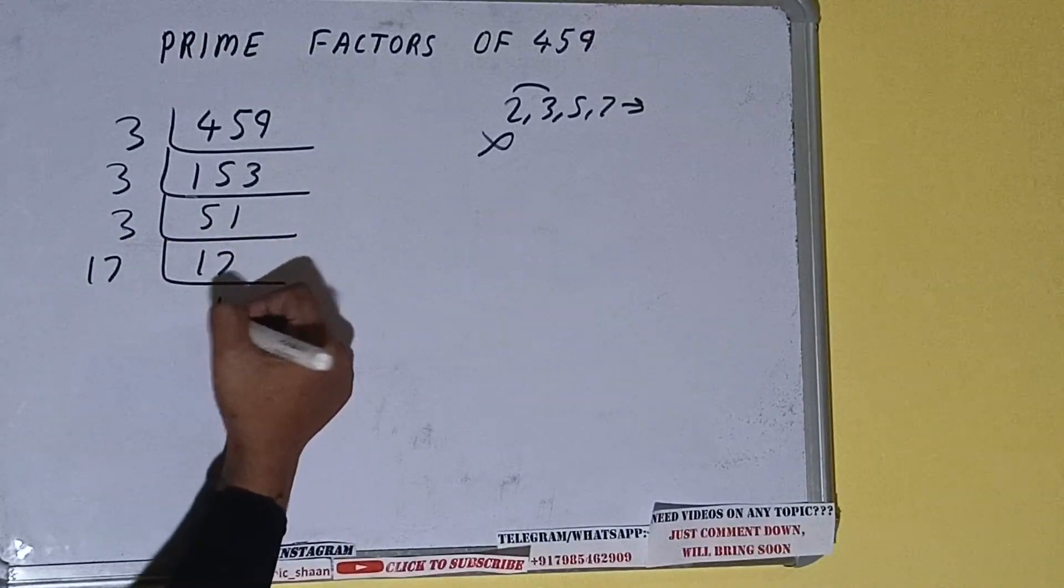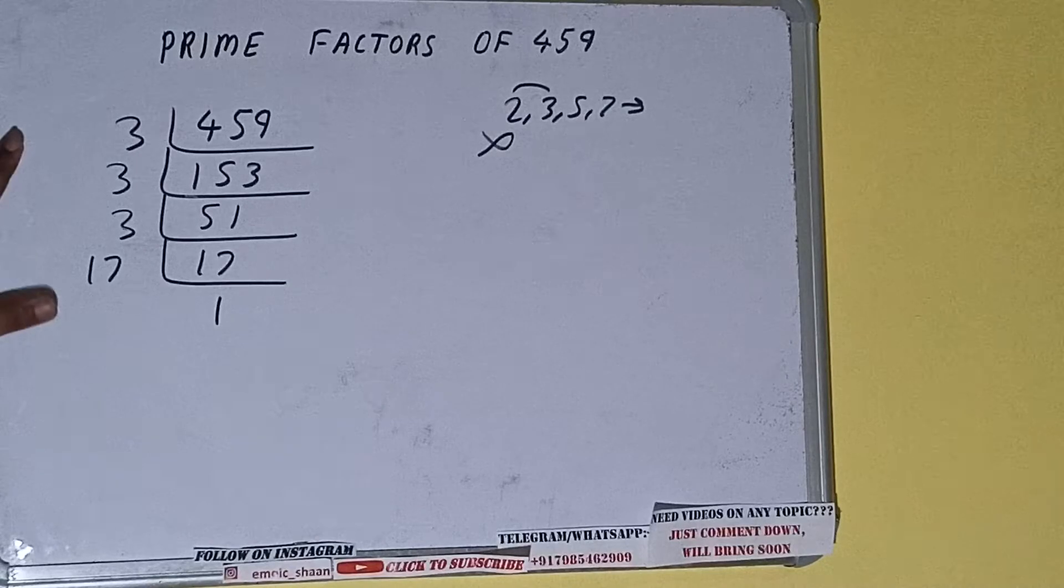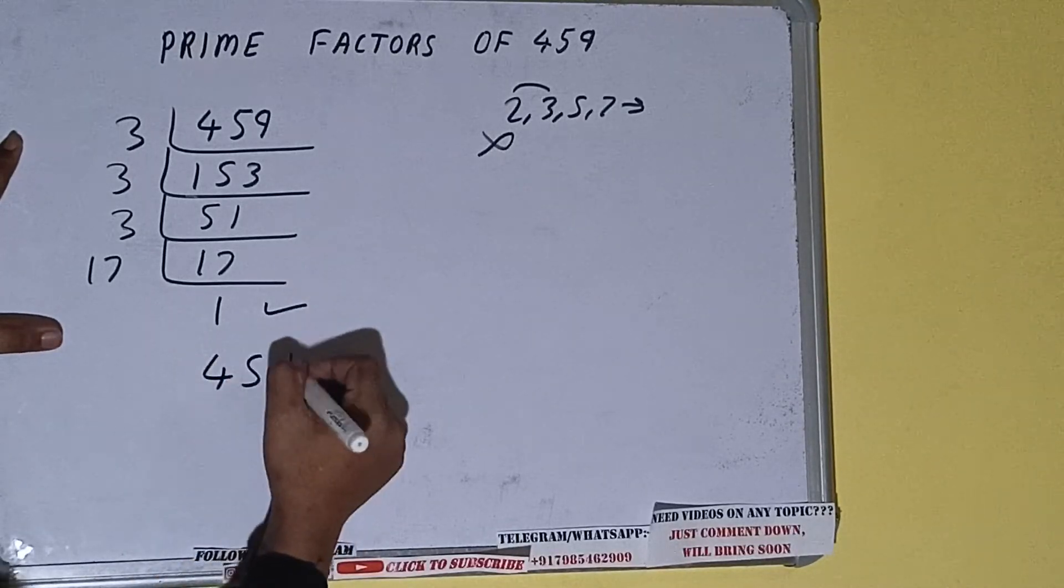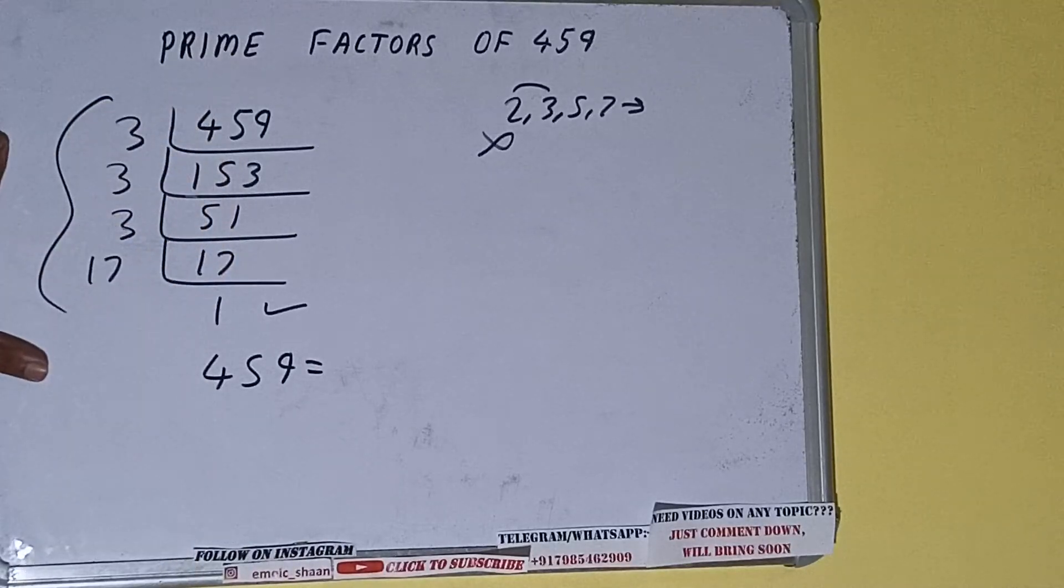That is 17. And once we do so, we'll be getting 1. Once we get 1, we need to stop and do one last thing. That is, prime factors of 459 will be whatever we have on the left-hand side.